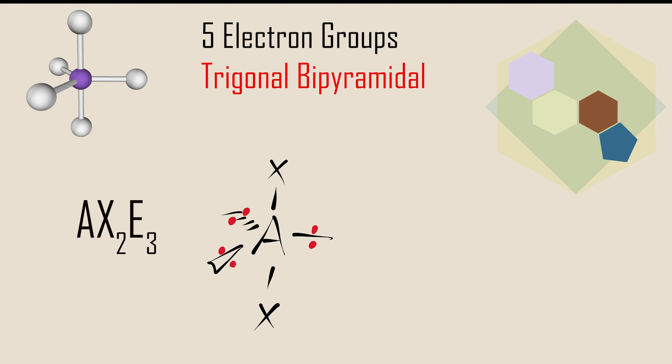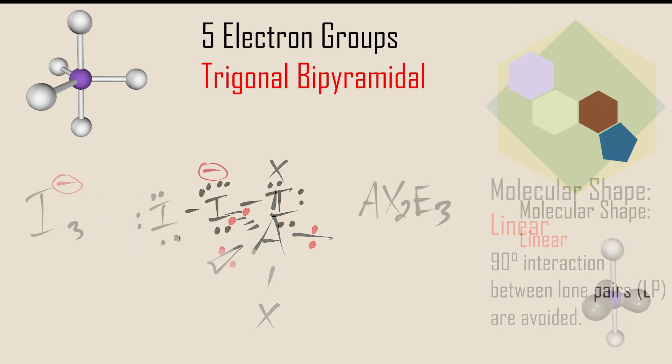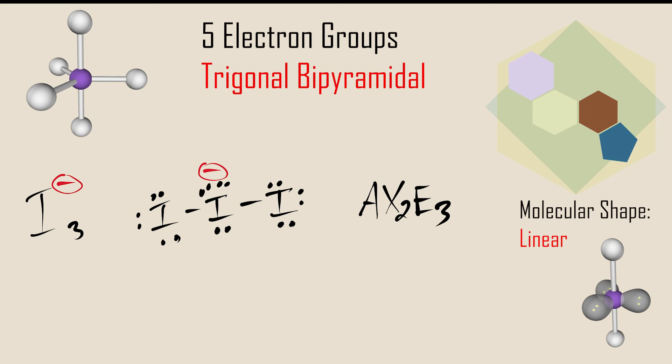In AX2E3 molecules, the three lone pairs occupy the equatorial positions while the two bonding groups occupy the axial positions. This gives the molecule a linear shape. Here is an example with the triiodide ion. Again, without drawing the proper Lewis structure first, one could get the AXE designation wrong and therefore the molecular geometry wrong.